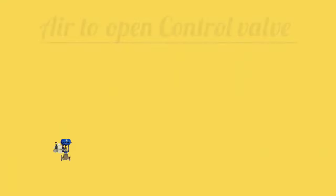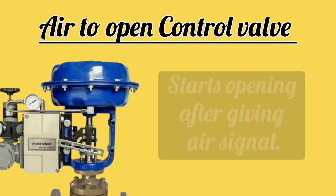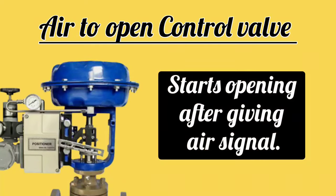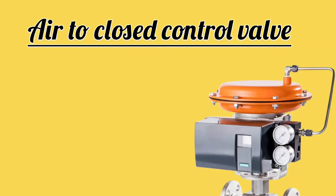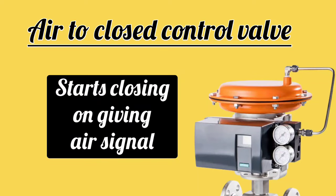See friends, the air-to-open control valve starts opening after giving an air signal. In this control valve, air is supplied from the bottom of the diaphragm. And the air-to-closed control valve starts closing on giving an air signal. In this control valve, the air signal is supplied above the diaphragm.